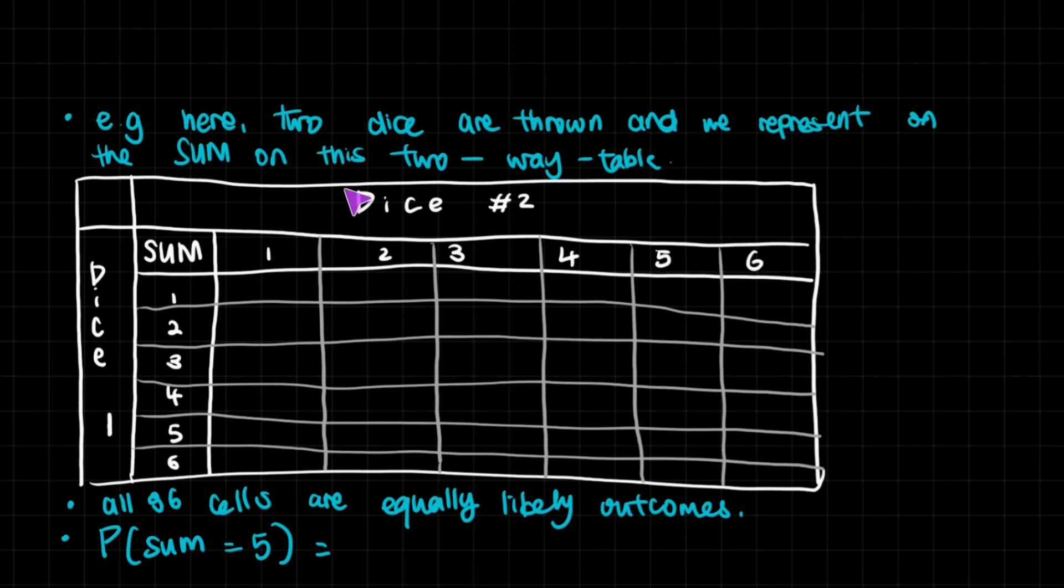We know that dice, dice one has a probability of getting one or two or three or four or five or six. Assume that it's fair. Dice two can get one, two, three, four, five, six as well. So the sums would look like this.